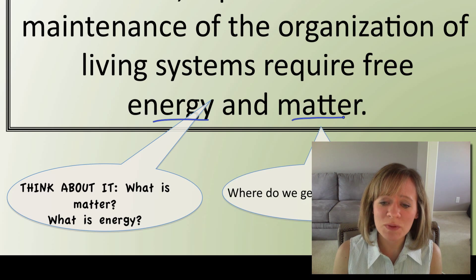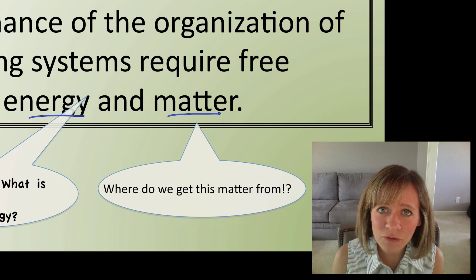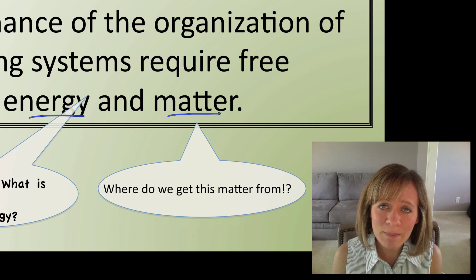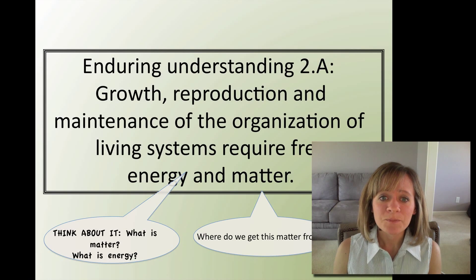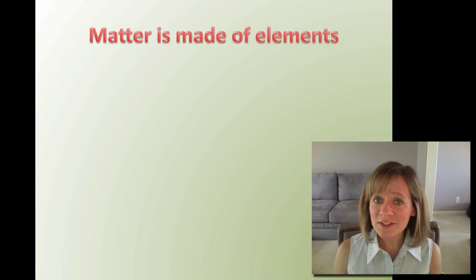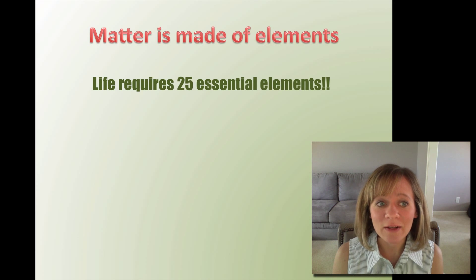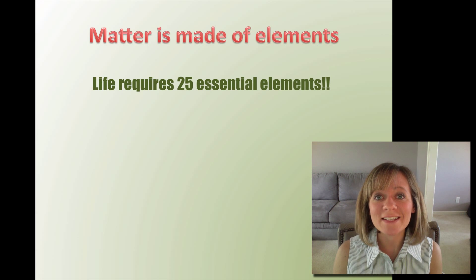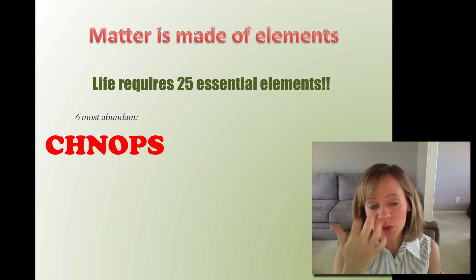The next question you should be thinking of is: where do living systems get matter from that they need to live and grow and reproduce? The answer is elements. Matter is made of elements. Life requires 25 essential elements. Of those 25, there are six that are really, really important.